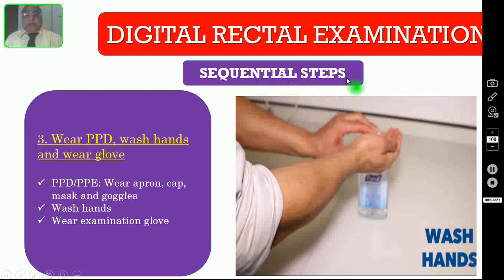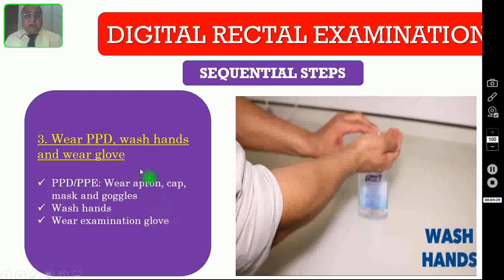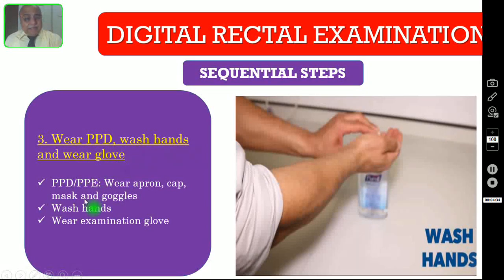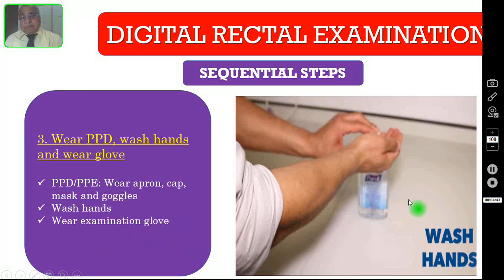Number three: you have to wear personal protection devices or personal protective equipment — that includes an apron, cap, mask, and goggles. Then wash your hands and wear the glove. Here you need not wear a sterile glove; you can use an ordinary examination glove.